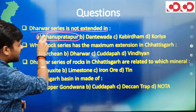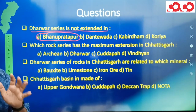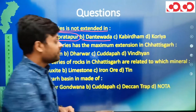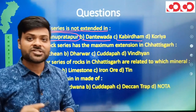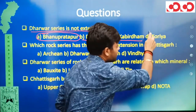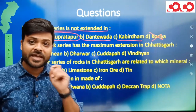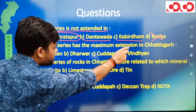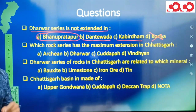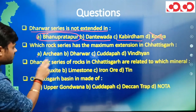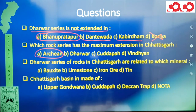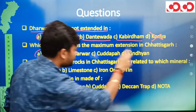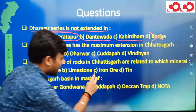Now we can see some questions already asked in CGPSC. The first question was: 'Dharwar series is not extended in' — with options Bhanupratappur, Dantewada, and Korea. The second question: 'Which rock series has the maximum extension in 36 Garh?' — answer: Archean Rocks. The third question: 'Dharwar series of rocks in 36 Garh are related to which mineral?' — answer: iron ore.